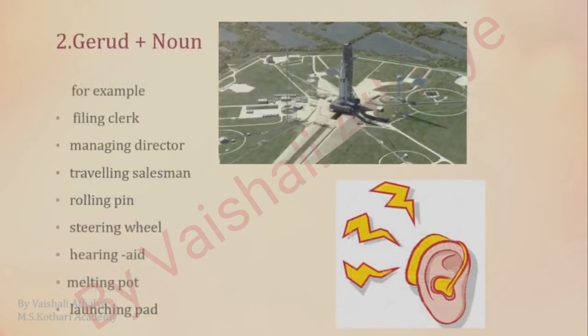The other way to form a compound word is putting a gerund with a noun. For example: filing clerk, managing director, travelling salesman, rolling pin, steering wheel, hearing aid, melting pot, launching pad. All these words have a gerund first and a noun later.